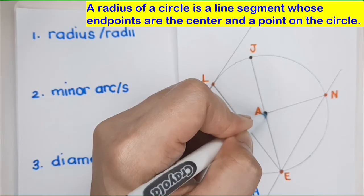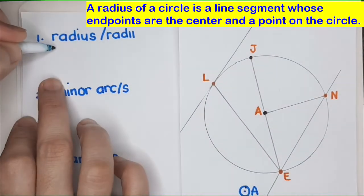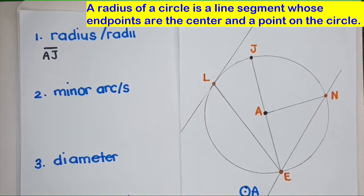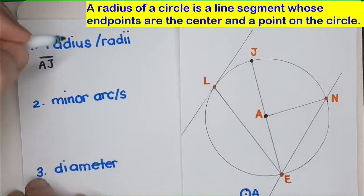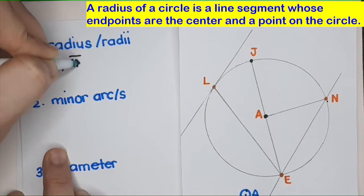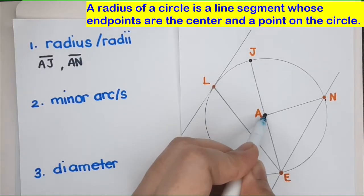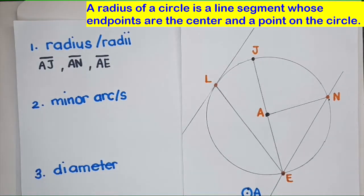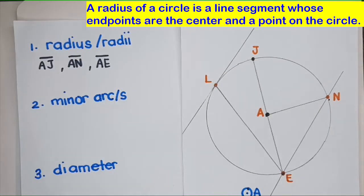It has two endpoints, where one endpoint is the center. So you always start from the center, and then you pick one point on the circle. For example, line segment AJ — this is a Radius. We can also have line segment AN, and line segment AE. It's that easy to find a radius: start with the center and connect it to one point on the circle.